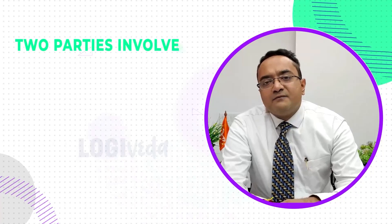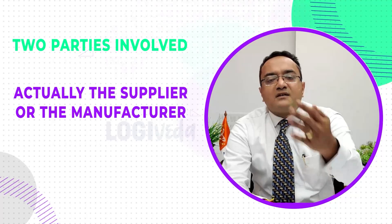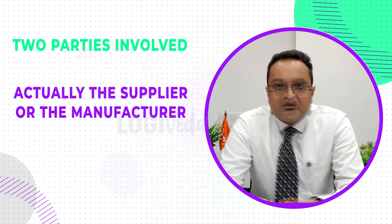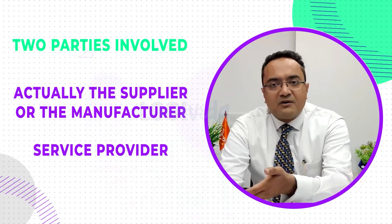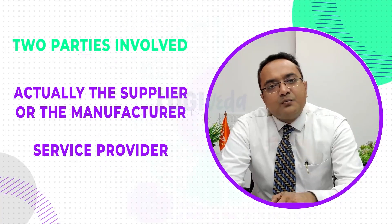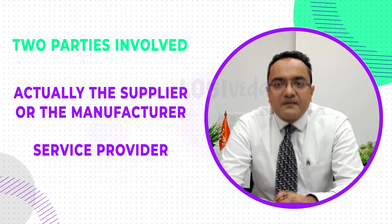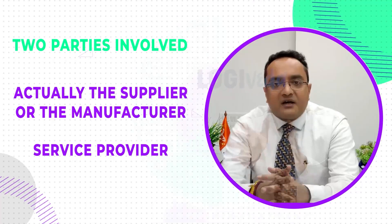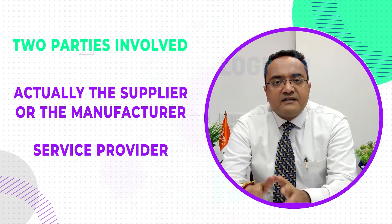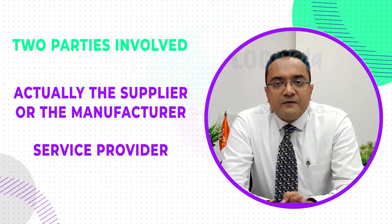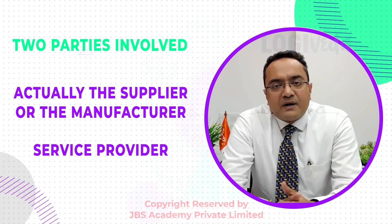Basically there are two parties involved: one is the supplier or manufacturer who gives a subcontract to a service provider — either a forwarder, a shipping line, or a truck driver. The supplier procures cargo as raw material from different locations, brings it to the factory for manufacturing, and then gets it delivered to end users. This is the example of second party or 2PL logistics.